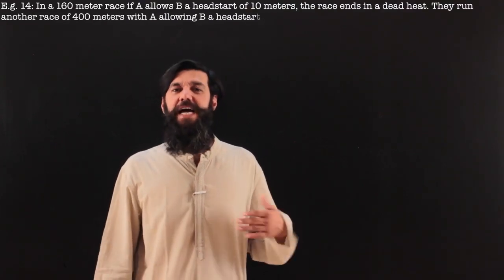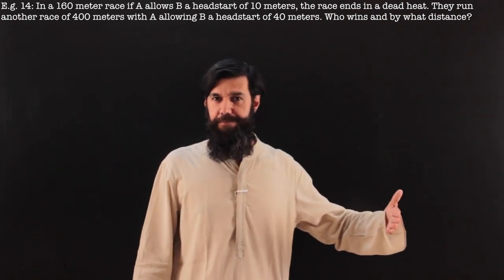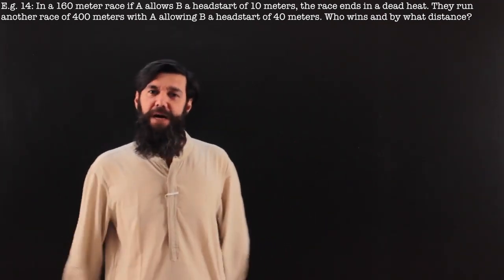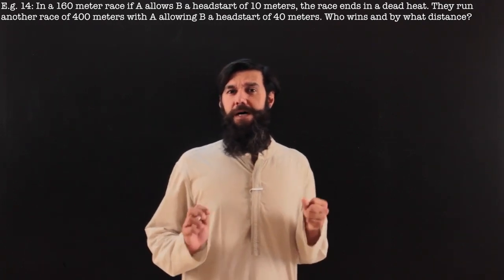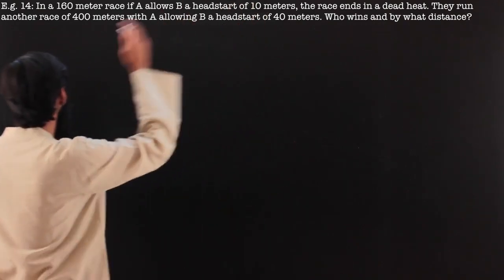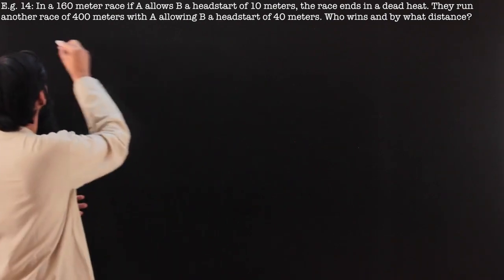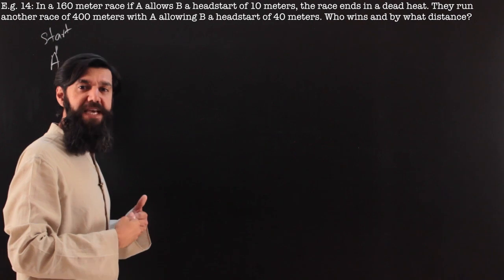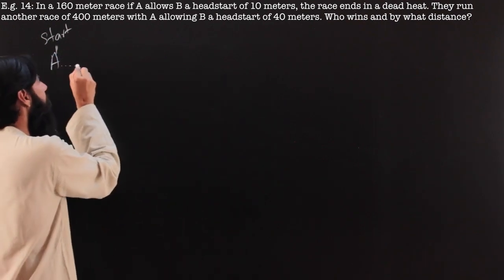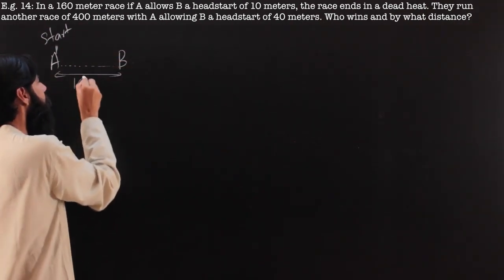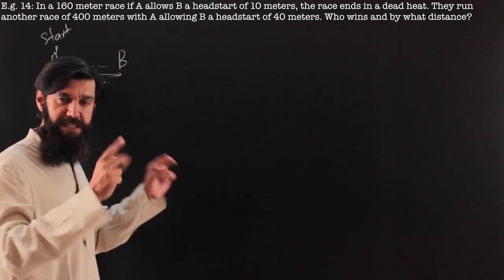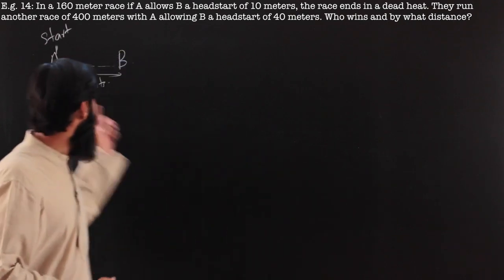Let's make the question far more tough. In a 160-meter race, if A allows B a head start of 10 meters, the race ends in a dead heat. Let's understand what that means. A will be at the starting point, but B is allowed to go ahead and stand 10 meters ahead. The head start is given in terms of distance. The race has not begun yet — the pistol has not fired. B takes position 10 meters ahead, then both start running simultaneously.